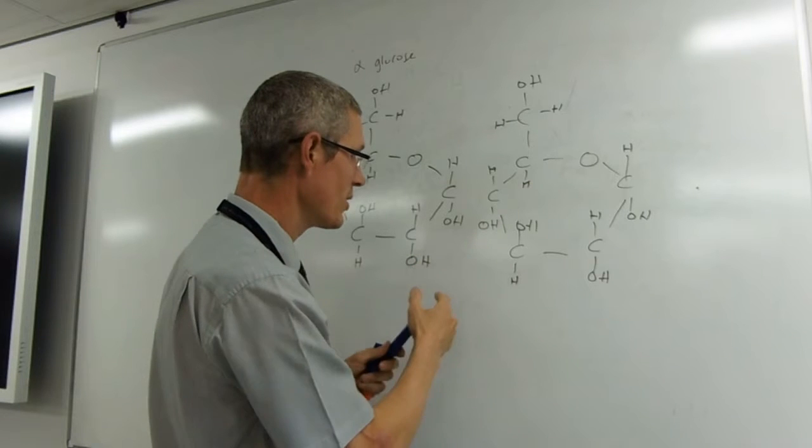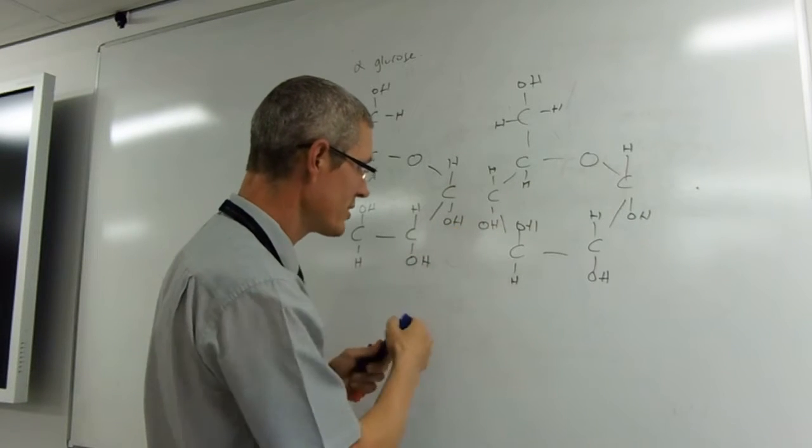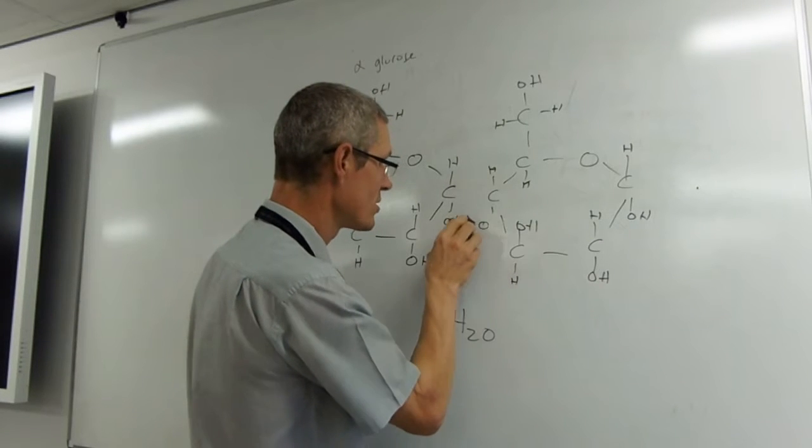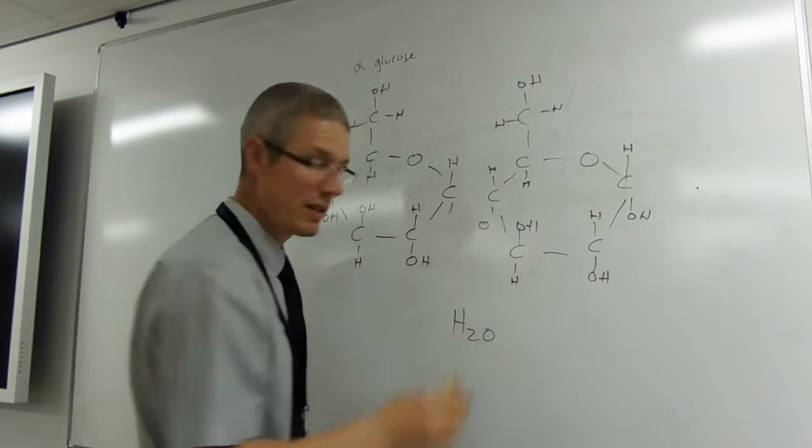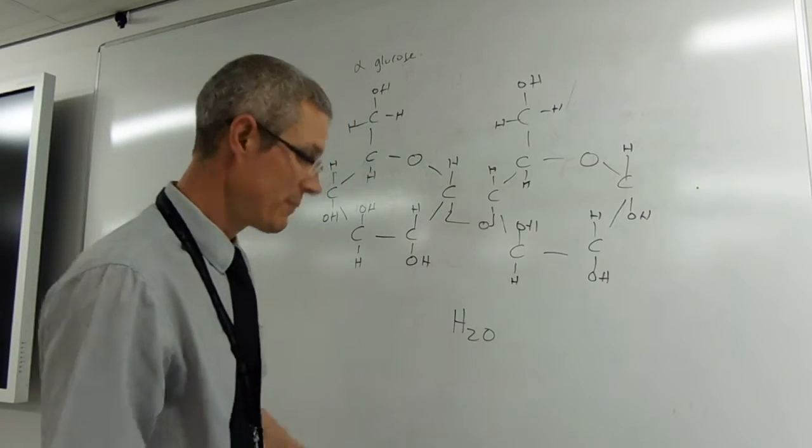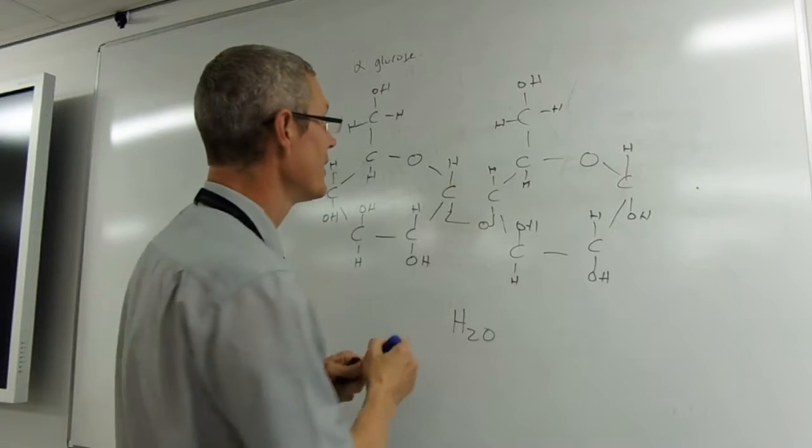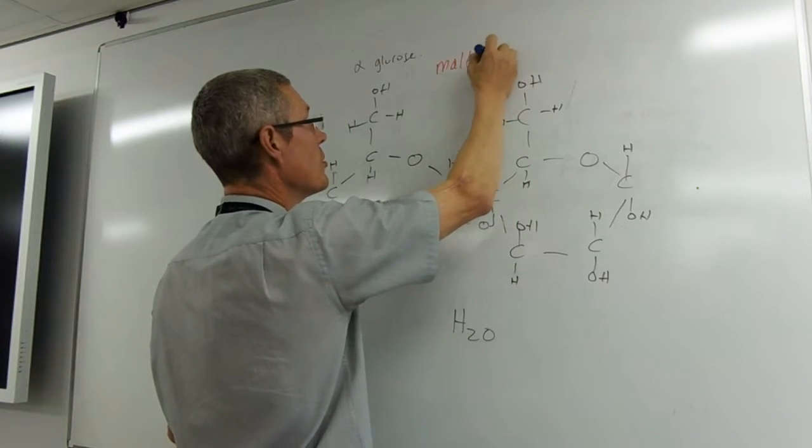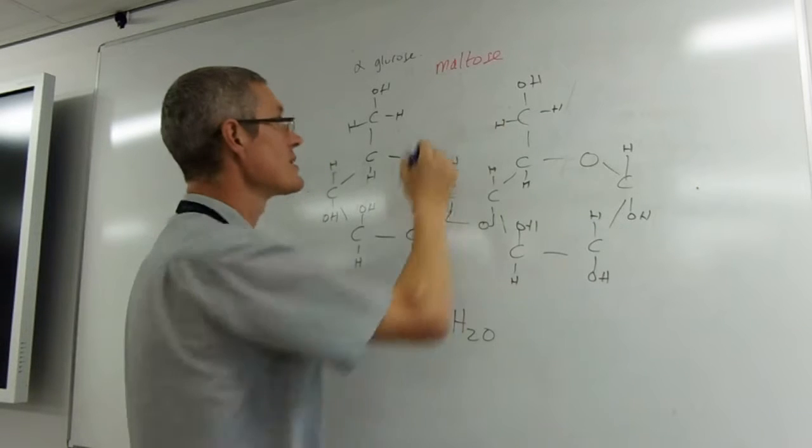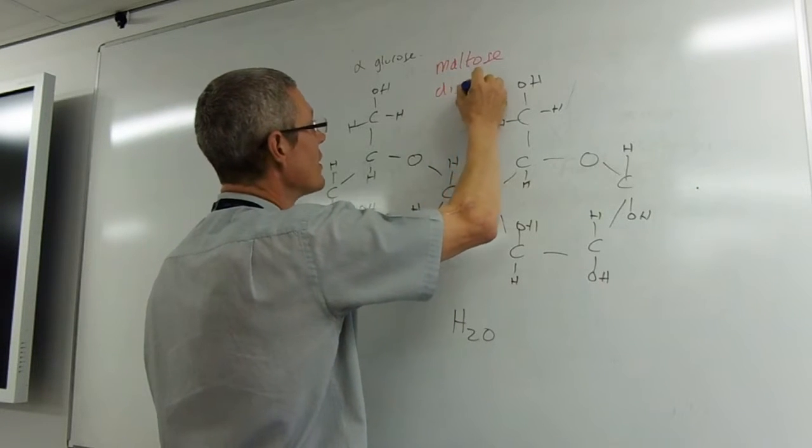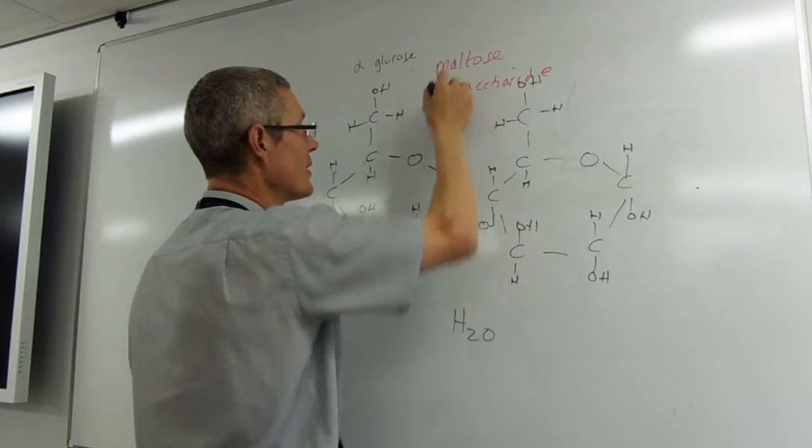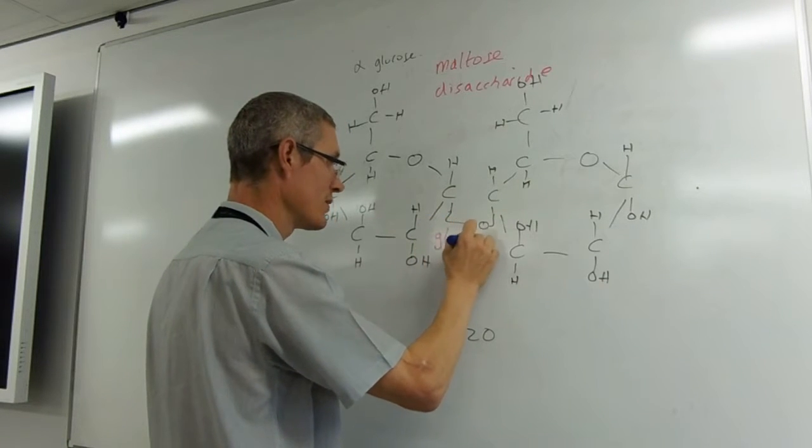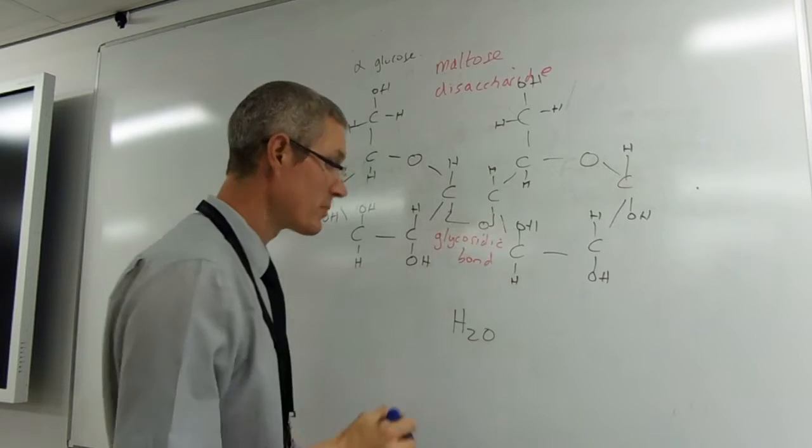So I need to find H2O. So H, another H and an O. H2O. And I've got to pay for that. H, H, and an O. And I'm just going to tidy that up. There. There. And what we've made there is, there's two alpha glucoses. So we've now made Maltose, which is a disaccharide. And this bond here, we have a glycosidic bond.